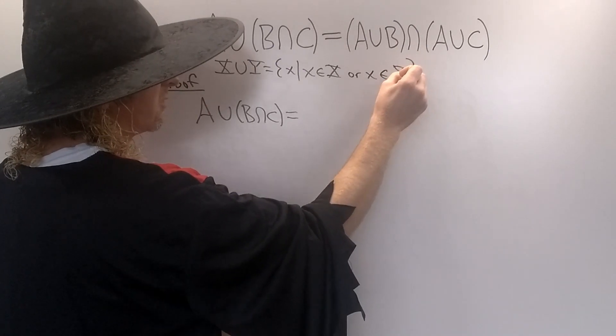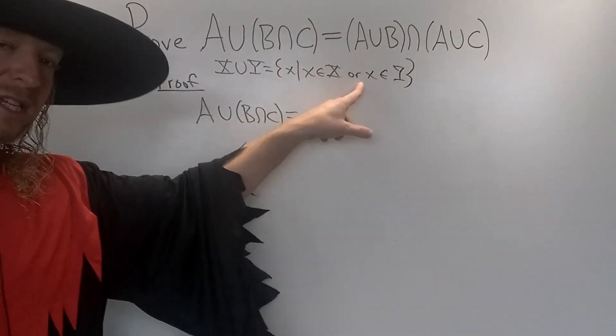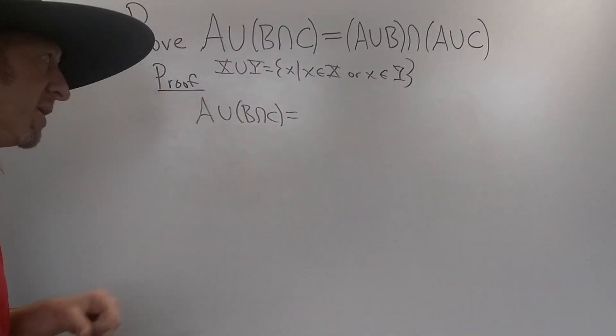That's the definition of union. Intersection is the same except you have an and instead of an or.